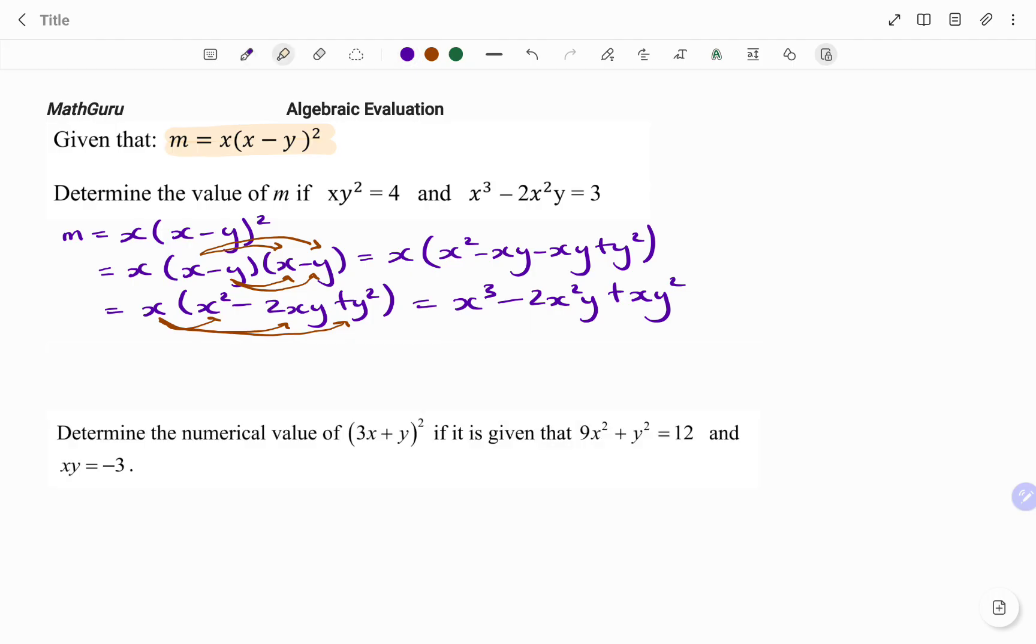Now, going back to the question, we've been told that xy squared is equal to 4 and x cubed minus 2x squared y equals 3. So I'm going to replace that in my expression. I change x cubed minus 2x squared y, that will give us 3, and then I have xy squared, that's equal to 4, and the operation between that is a plus.